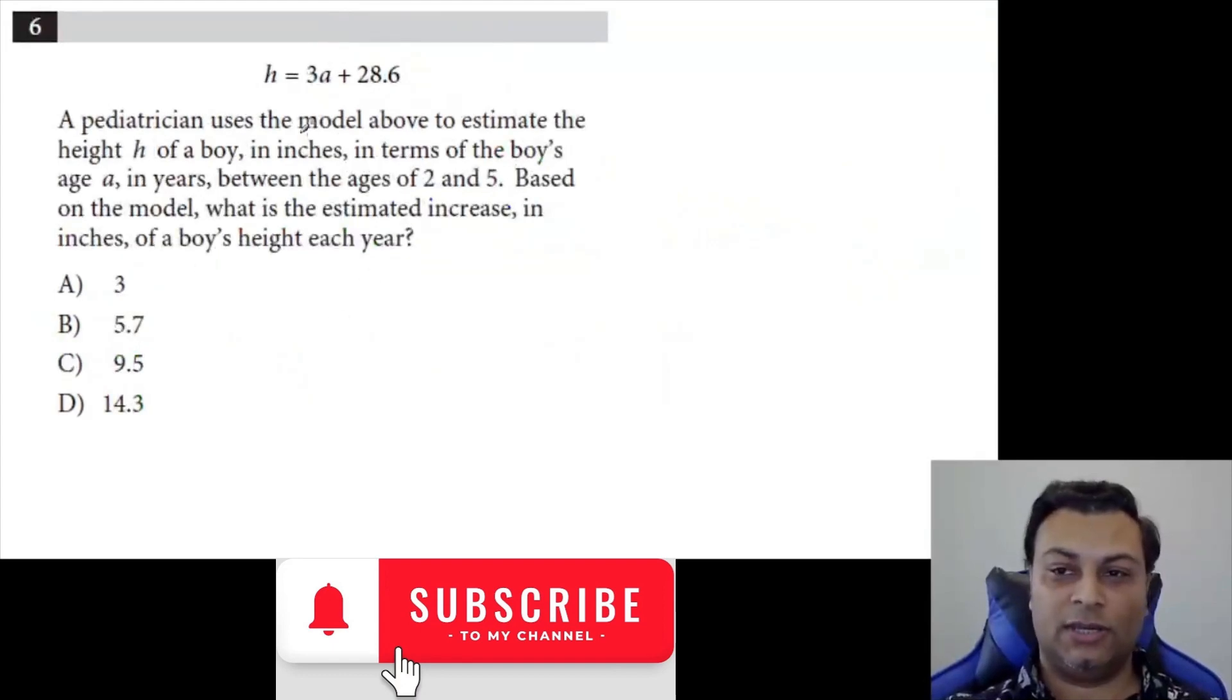Moving on to number six, h equals 3a plus 28.6. A pediatrician uses the model above to estimate the height h of a boy in inches in terms of the boy's age a in years between the ages of two and five.